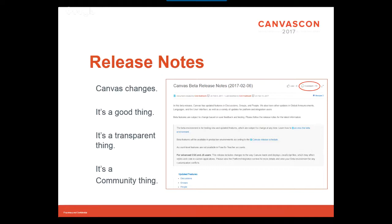People do engage with the release notes — the circle in the top right shows the number of comments, and there were 72 on one particular beta release. That's not unusual; sometimes it's more if people have something to say. People give their constructive criticism. I have seen features where people say I don't really like the way this is going to work, here's why, it won't work for my institution — and Canvas will pull it back, rework it, and put it in another release. So don't think they're not listening to those comments. It's a community thing — you start to see the same names on the release notes. Definitely follow the release notes.